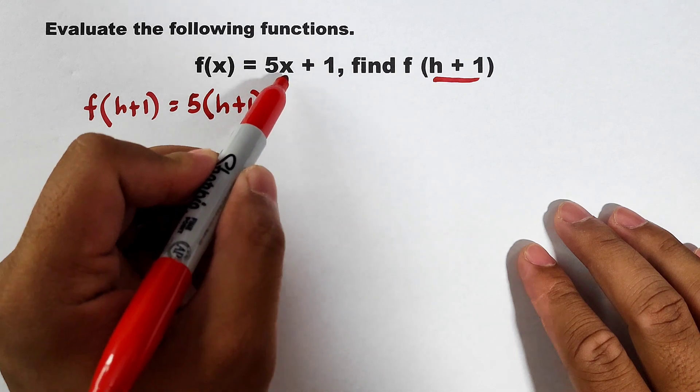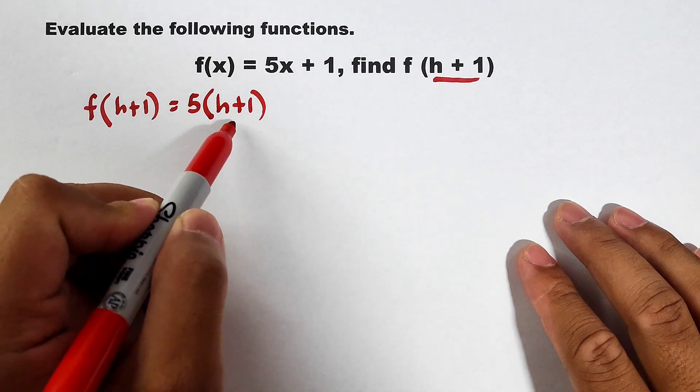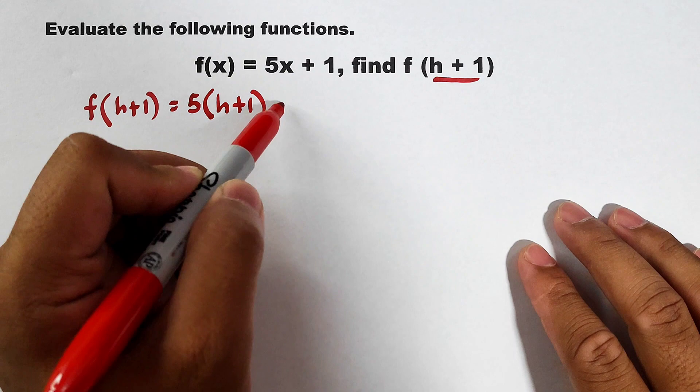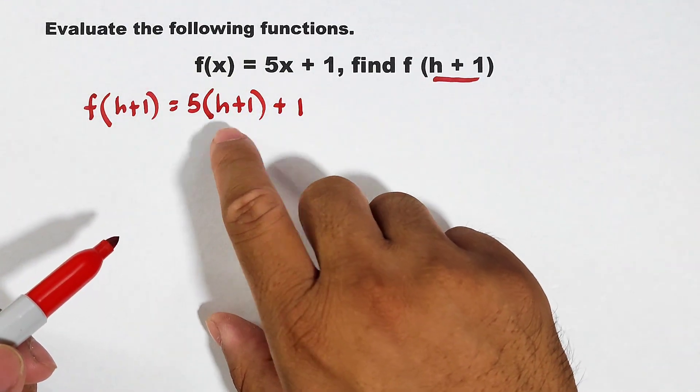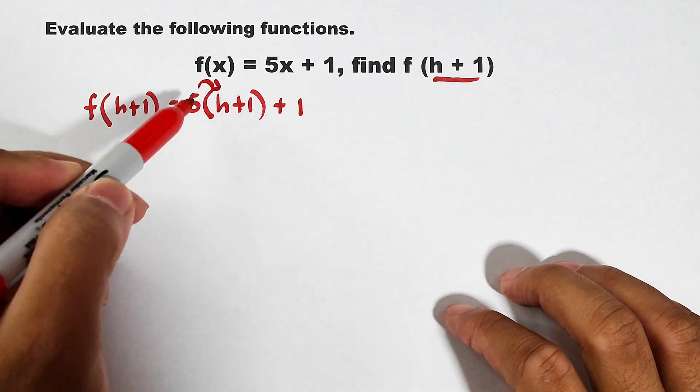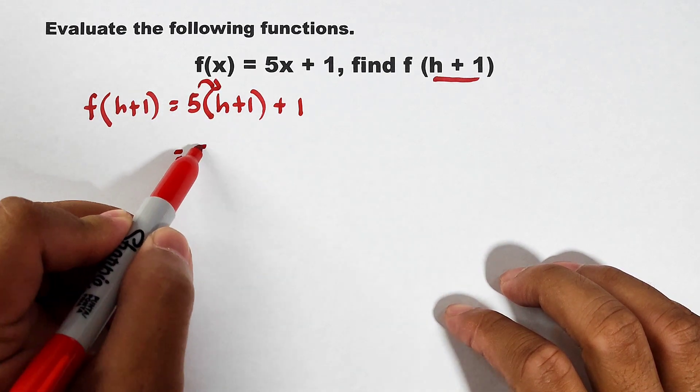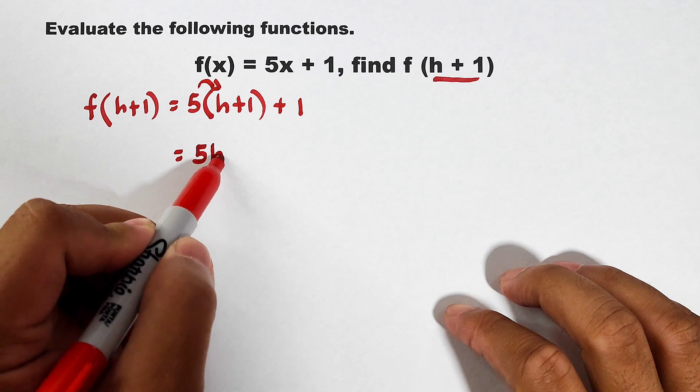As you can see, your variable x is replaced by this and then plus 1. And you need to simplify this using distributive property. If we have 5 times h, you have 5h.